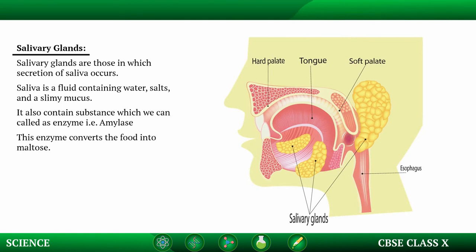Secretion of saliva occurs in a group of three salivary glands. The first gland is located below the tongue, the second is located at the base of the ear, and the third is located on the inner side of the angles of the lower jaw.